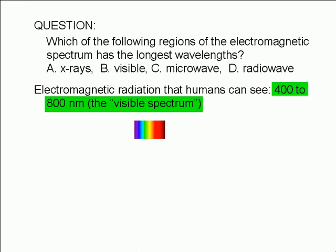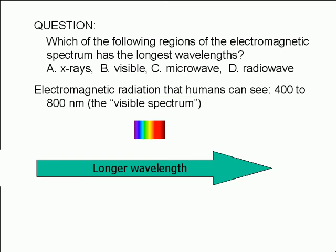Red light is at the long wavelength end of the spectrum. The term electromagnetic spectrum refers to the entire range of possible wavelengths. The electromagnetic spectrum is divided into several regions.